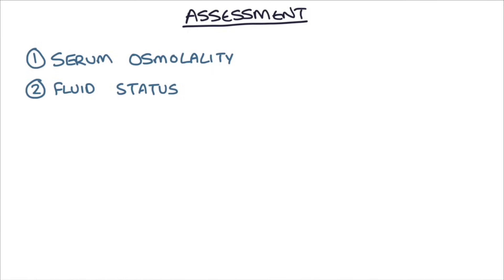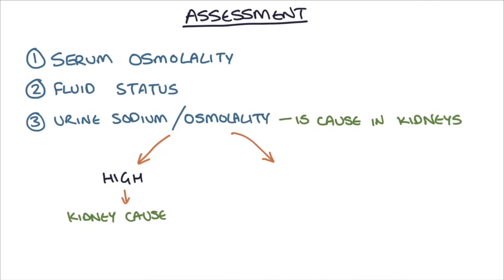Once you've checked the person's fluid status, the next thing is to look at the urine sodium or urine osmolality. This simply tells you whether the patient's cause of hyponatremia is in the kidneys or somewhere else. If the urine sodium or urine osmolality is high, you know the problem's in the kidneys. If the urine sodium or urine osmolality is low or normal, you know the problem is somewhere else because the urine osmolality is reflecting the osmolality of the blood, which means the kidneys are working normally.